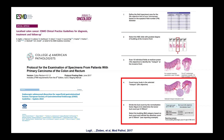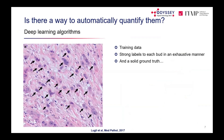Tumour budding's clinical importance has grown to the point it's now included in ESMO oncology guidelines, CAP pathology guidelines, and gastroenterology guidelines — especially for T1 colorectal cancer — driving oncologists to require budding be reported.